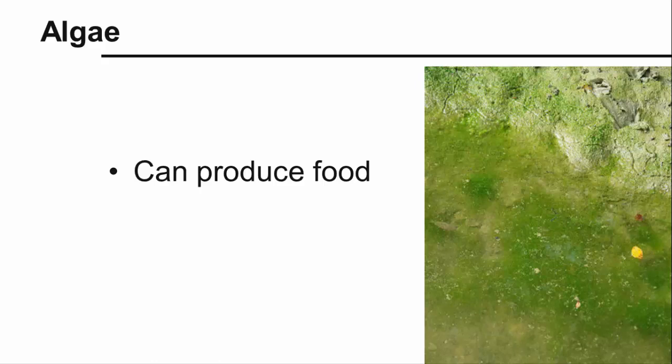Lichens do not have roots, stems, leaves, or any sort of vascular system to move nutrients and water. Lichens rely on rain and the air in their environment to get the water and nutrients they need to survive.